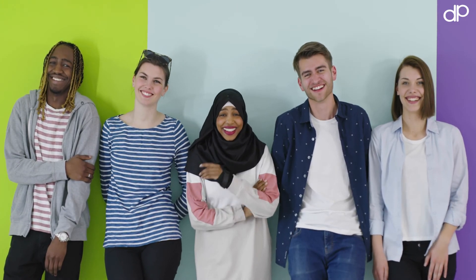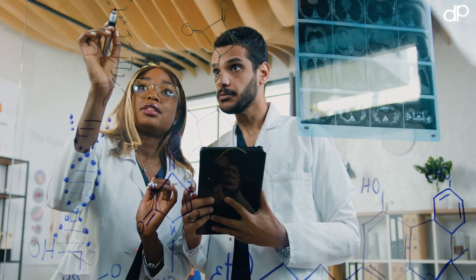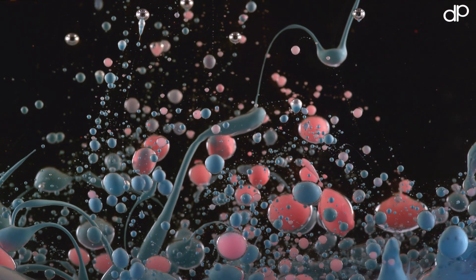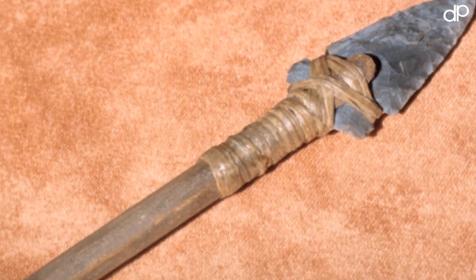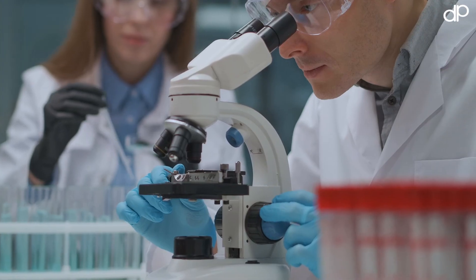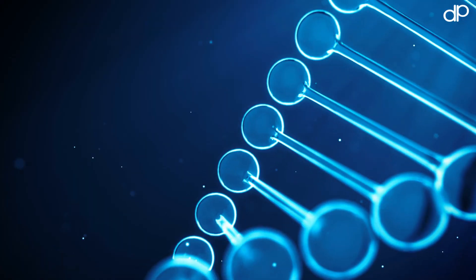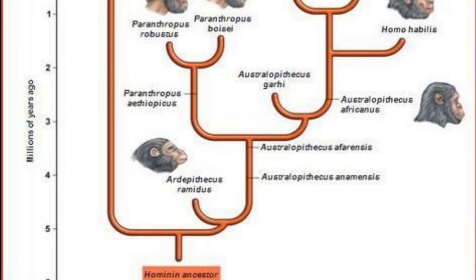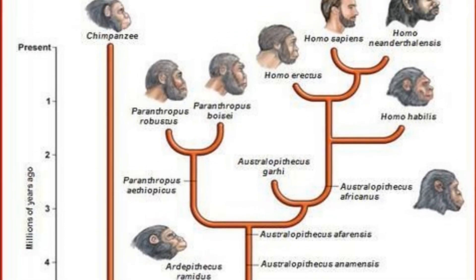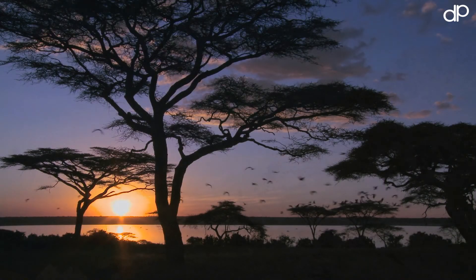There is a wealth of evidence supporting this theory from the fields of genetics, archaeology, and anthropology. This evidence includes molecular genetics, comparative anatomy, and the study of stone tools and other cultural artifacts. Studies of the human genome have shown that all modern humans share a common ancestry, and that African populations have the greatest genetic diversity, supporting the idea that modern humans originated in Africa and later migrated to other parts of the world.